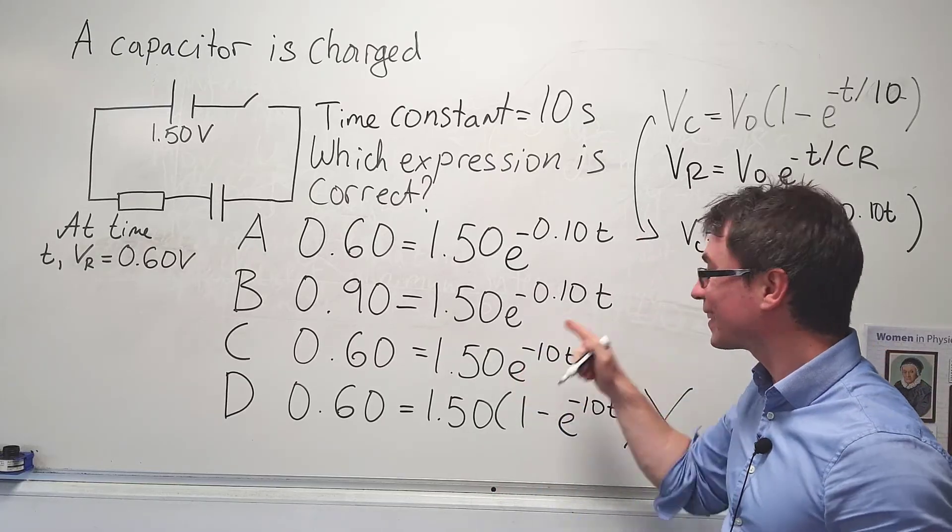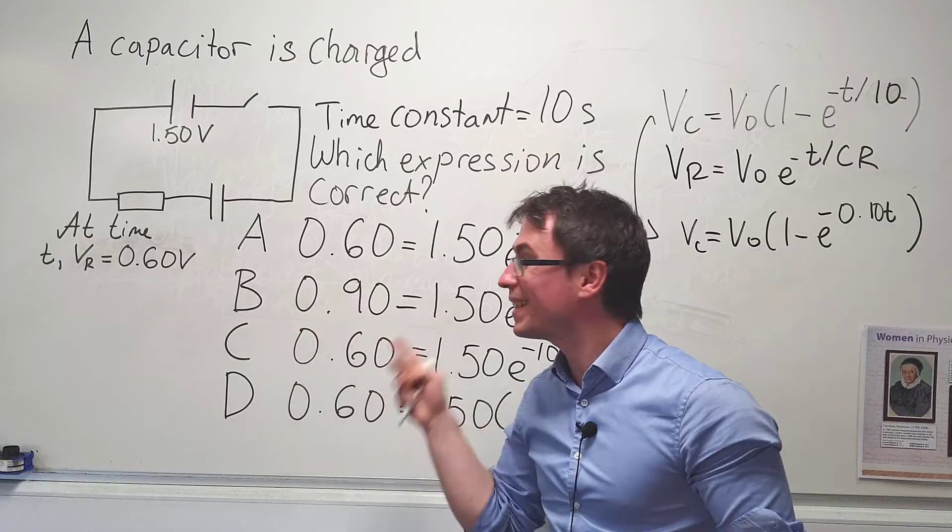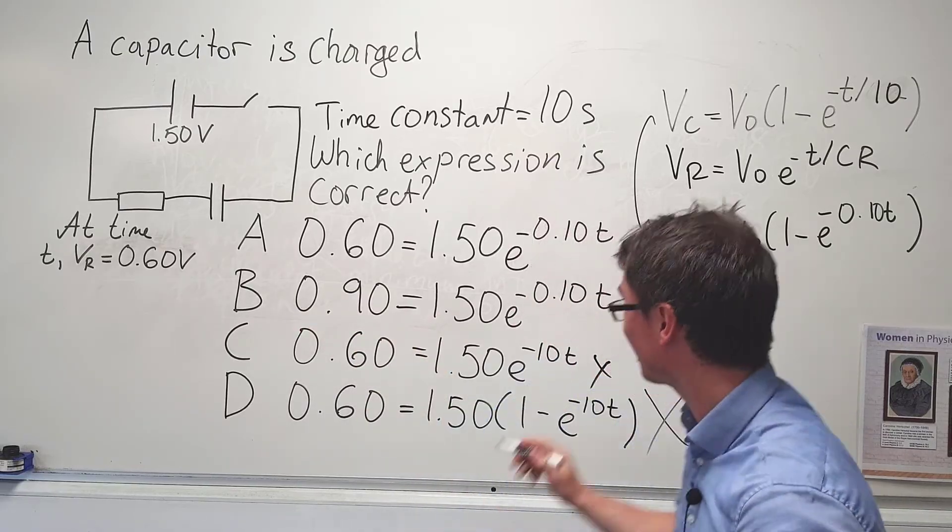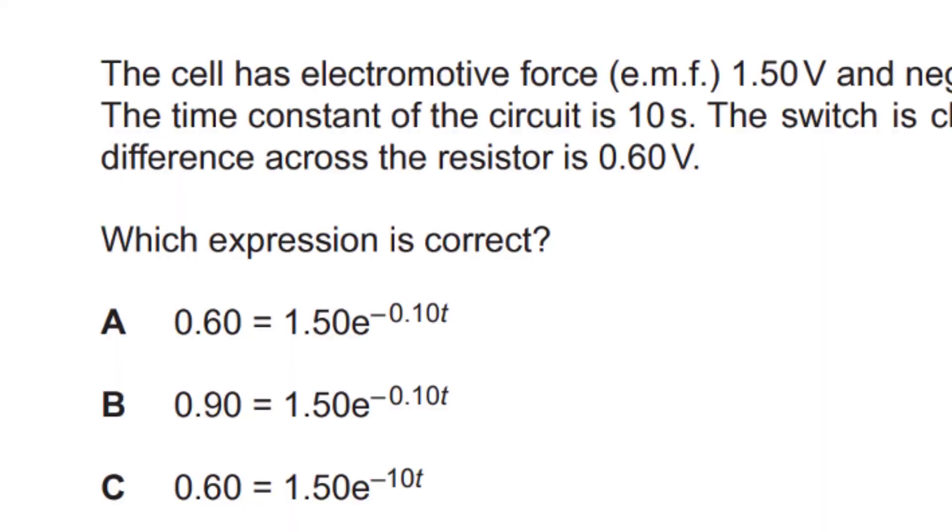Once again, we can see that the time constant is wrong. For B, the PD across the resistor is wrong. Which means that the correct answer is A.